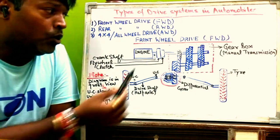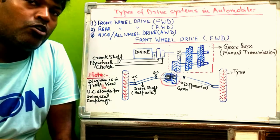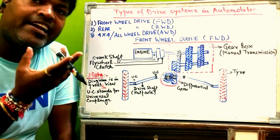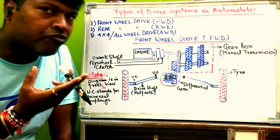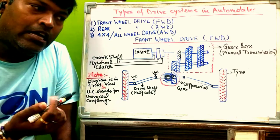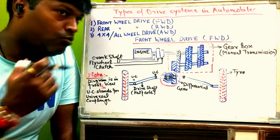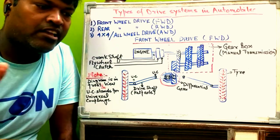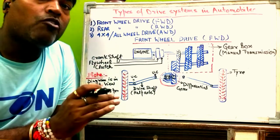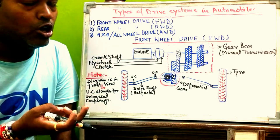From the clutch, power goes to the gearbox. The gearbox is somewhat similar to the accelerator, but the accelerator has a very narrow range of speed variation. On different road conditions — where there is high traffic, we need more torque and less speed; where traffic is low, we need high RPM and less torque.